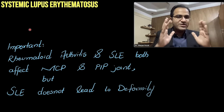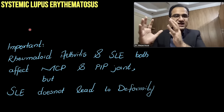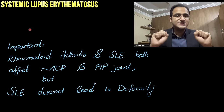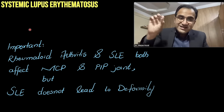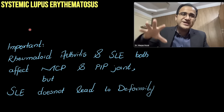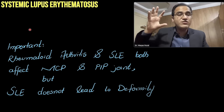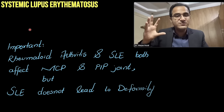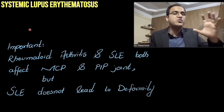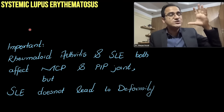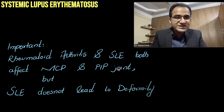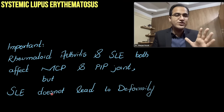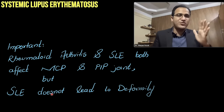An important point: both SLE and rheumatoid arthritis damage the joints, and both affect the metacarpophalangeal joint and proximal interphalangeal joint. However, rheumatoid arthritis causes severe damage and deformity of the joints, whereas SLE causes inflammation of the joints but does not lead to severe deformity. This is a key distinguishing feature.